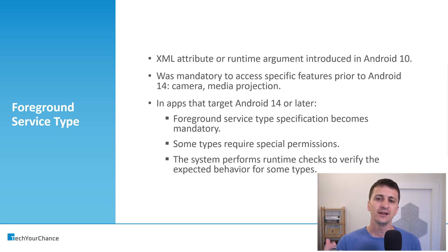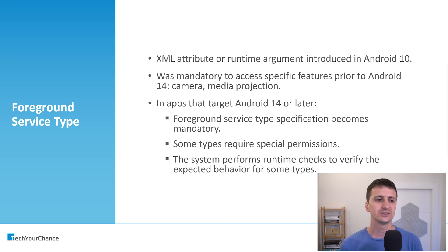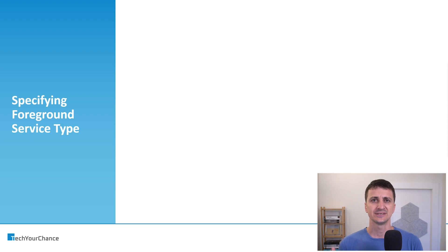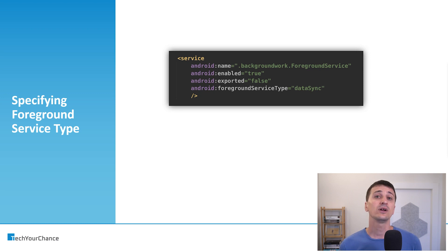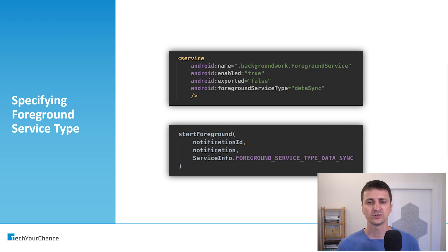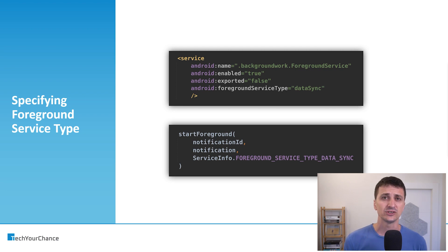My guess is that in future versions of Android these types will become more prominent, and maybe the user will be able to choose which types they allow. This is a continuation of a multi-year trend in Android development towards privacy and giving users more control. Now, there are two ways to specify the type. First, as an XML attribute when you declare your service in the manifest — you add foreground service type, in this example that would be data sync, a service used to sync data with the backend. Alternatively, you can specify foreground service types at runtime when you call start foreground inside your service — that's the third argument to the start foreground method. You can specify multiple types using OR operators in both the XML and runtime versions.